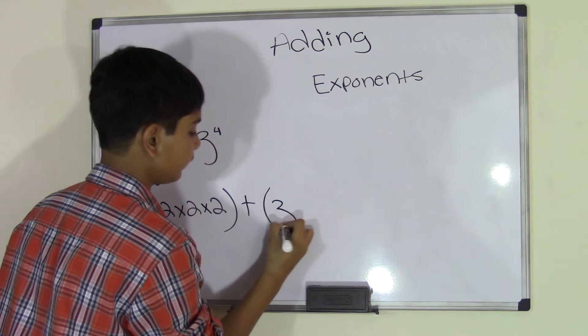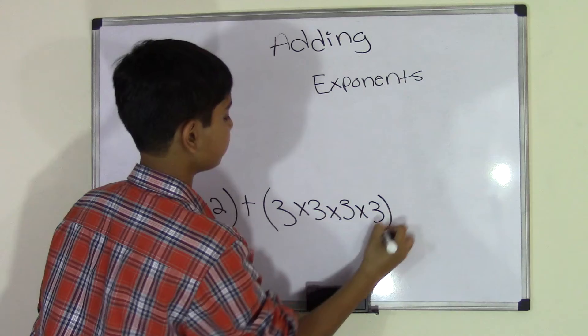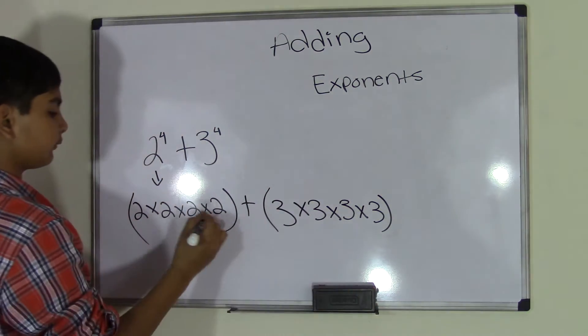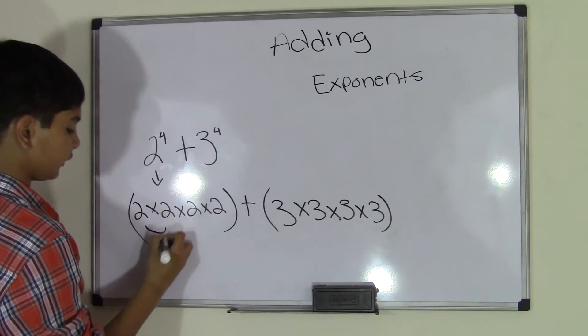We'll write 3 times 3 times 3 times 3, 4 times because 3 to the power of 4. Now we can understand it better. We have 2 times 2 times 2 times 2 plus 3 times 3 times 3 times 3. Let's go ahead and do that.